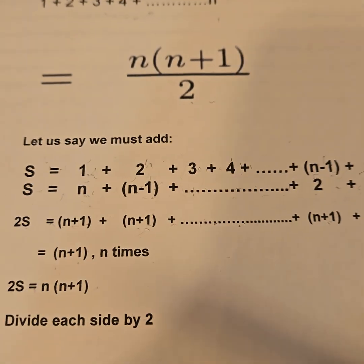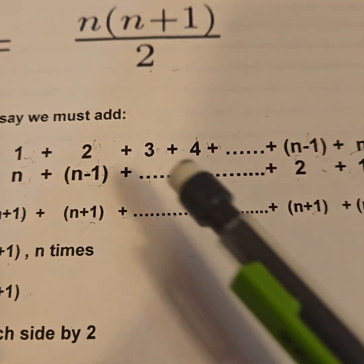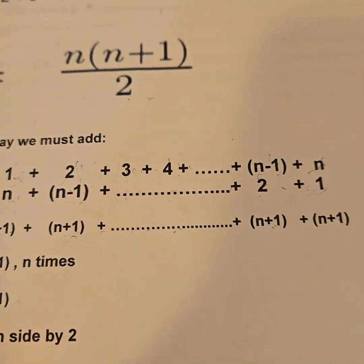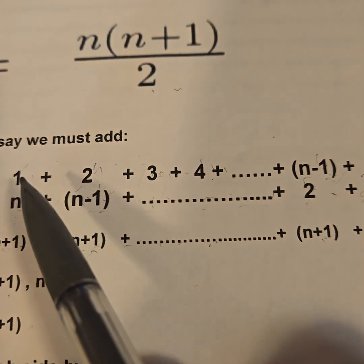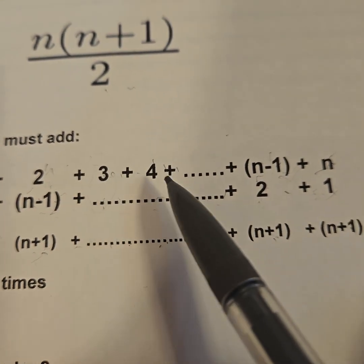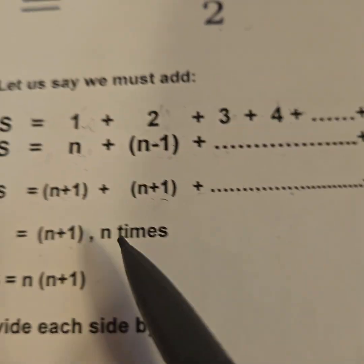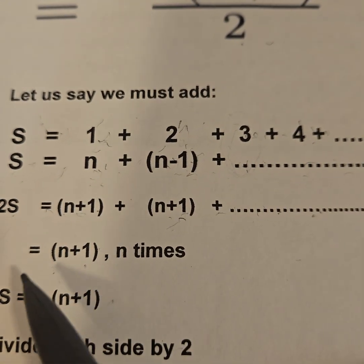So we have a whole bunch of n+1's. And how many do we have? There are n terms. You've got 1 + 2 + 3 + 4 all the way until n, so we have n+1, n times.